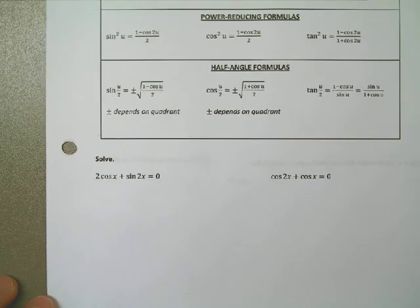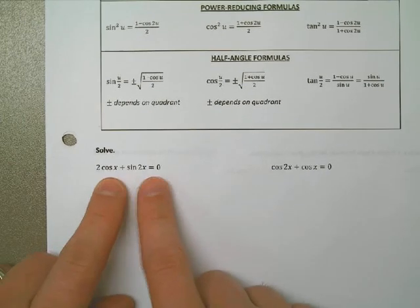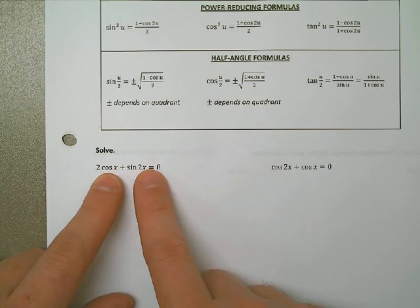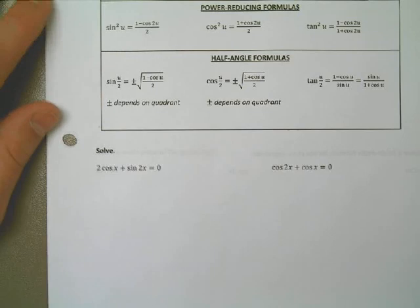But what do we do whenever we combine them? We haven't learned that so far. We do not know how to solve an equation that involves both a cosine of regular x and a sine of a 2x, a double angle.